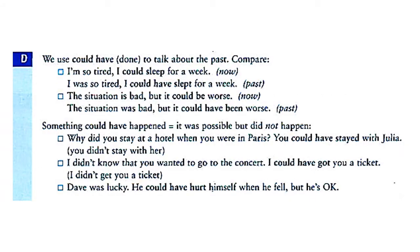We use 'could have' for past events or actions — 'could have done' to talk about the past. Compare: 'I'm so tired I could sleep for a week' — present action. 'I was so tired I could have slept for a week' — past. The situation is bad today but it could be worse. The situation was bad but it could have been worse. Something could have happened — it was possible but it didn't happen. For example: 'Why did you stay at the hotel when you were in Paris? You could have stayed with Julia.'